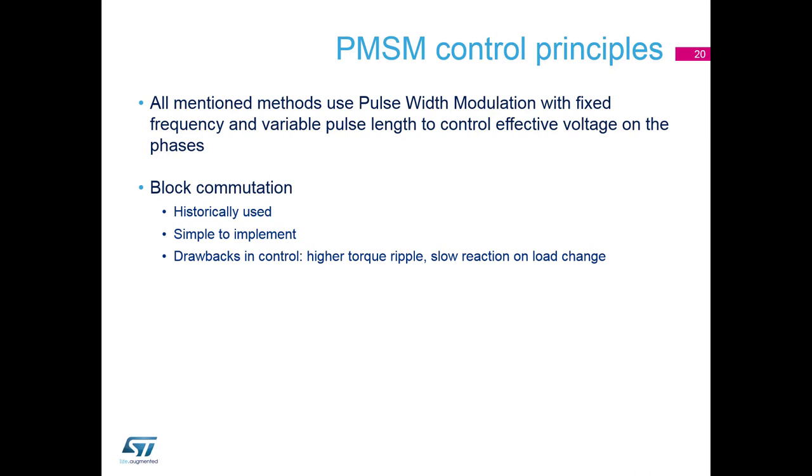The block commutation is the first method to control the permanent magnet synchronous motors. It consists of applying six combinations of the phase voltages in pre-calculated sequence. The periodic change of the phase combination is called a commutation and must appear at correct time. The measurement and setup of the commutation moment, as well as of effective phase voltage, are principles of this control method.